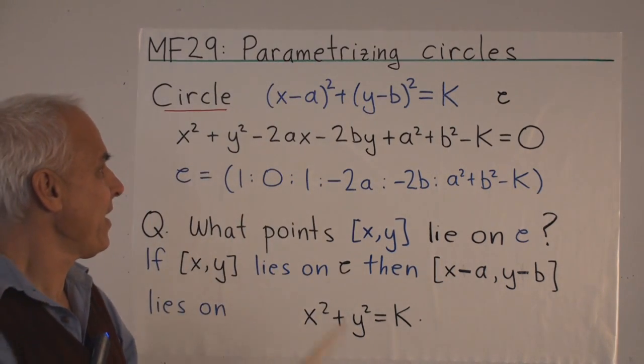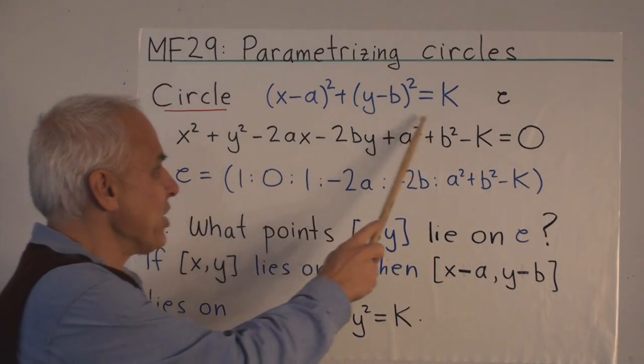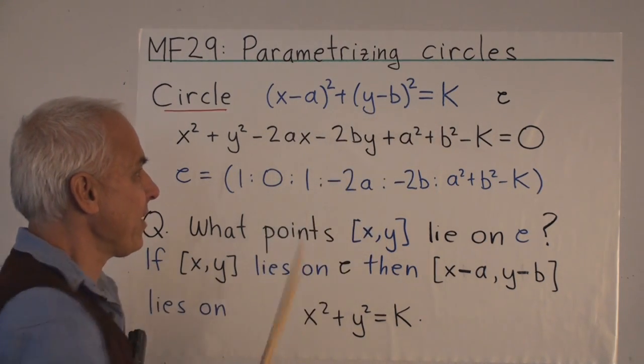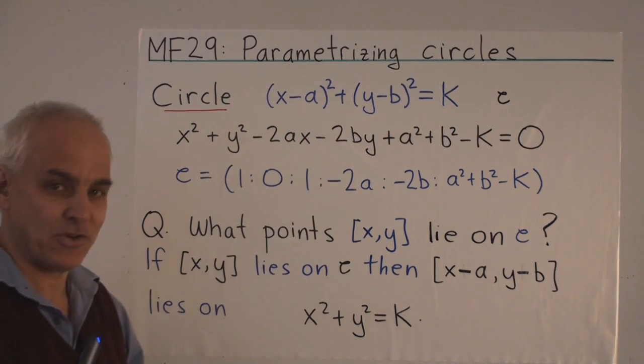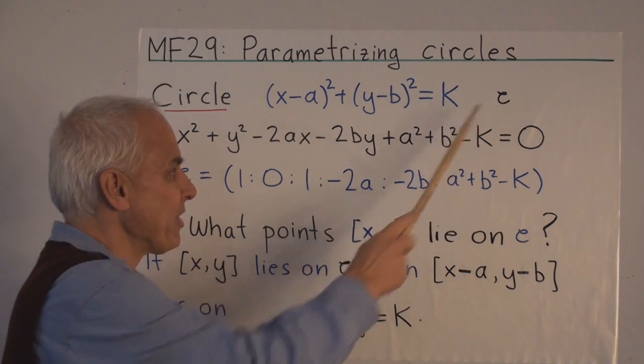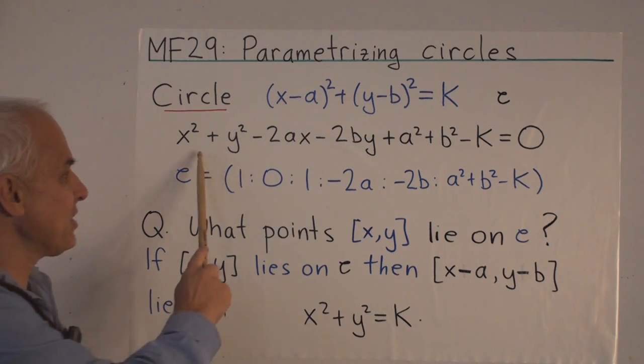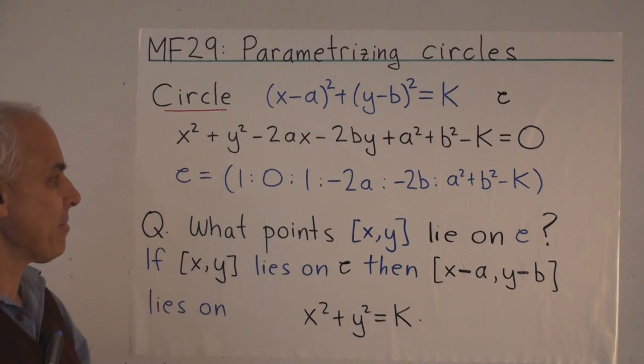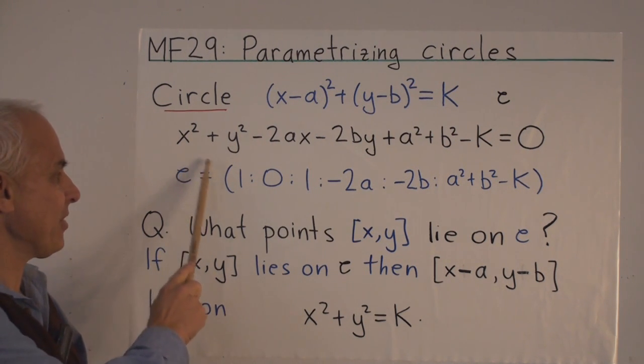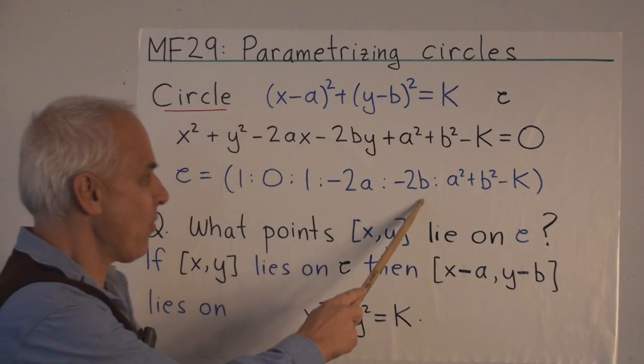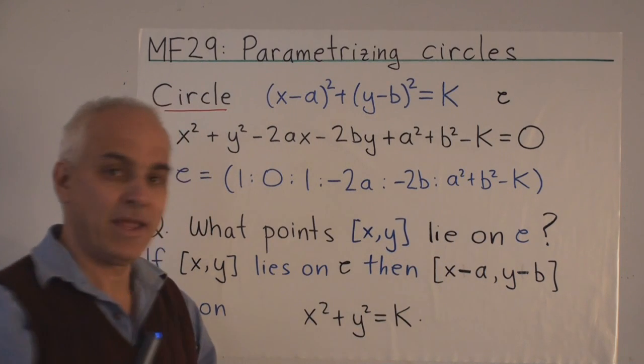A circle for us is an equation like this: (x-a)² + (y-b)² = K. The point (a,b) is called the center of the circle. The number K, which can be completely arbitrary, is called the quadrance of the circle. We usually denote a circle with a little curly c. Here is the equation of the circle written out, and we can express that by concretely listing the coefficients of x², xy, y², x, y, and the constant term in a list.